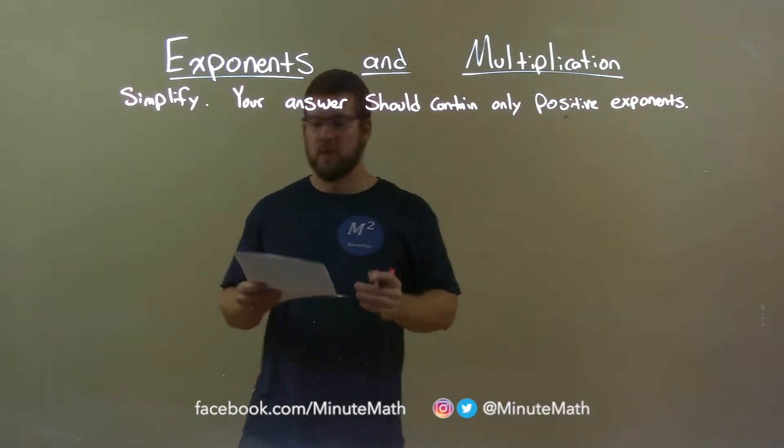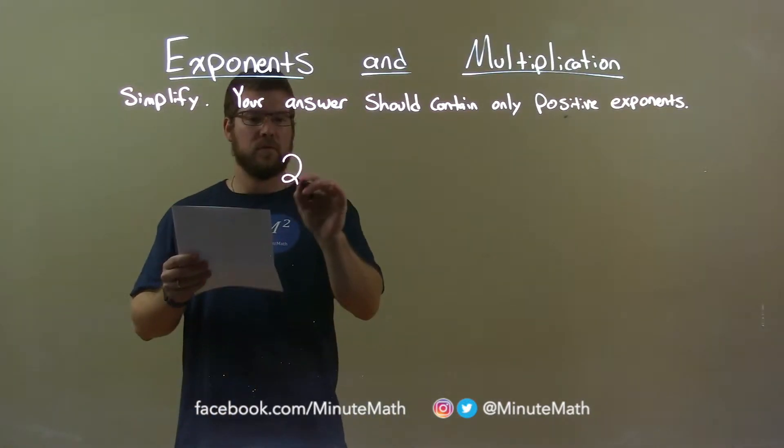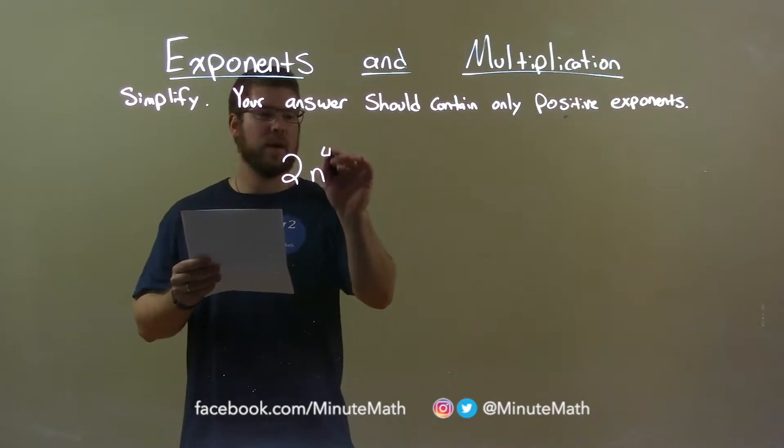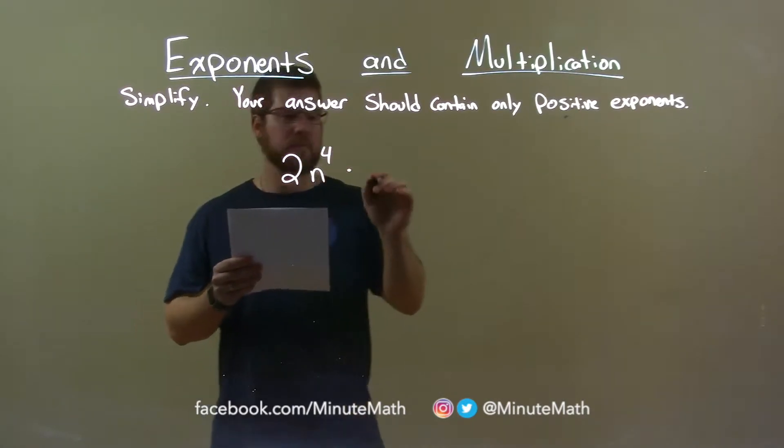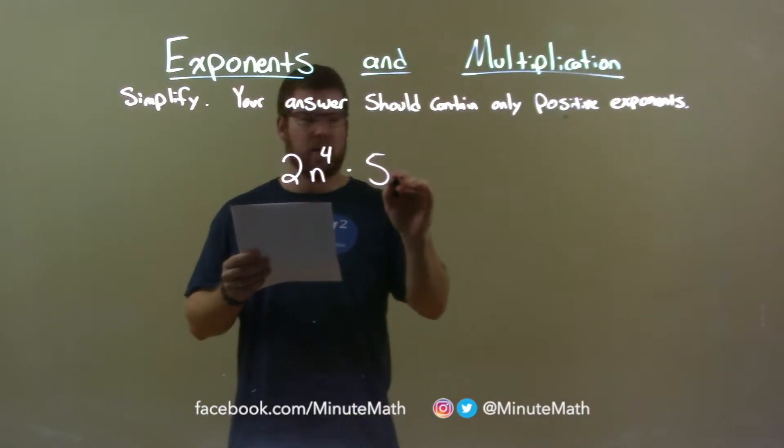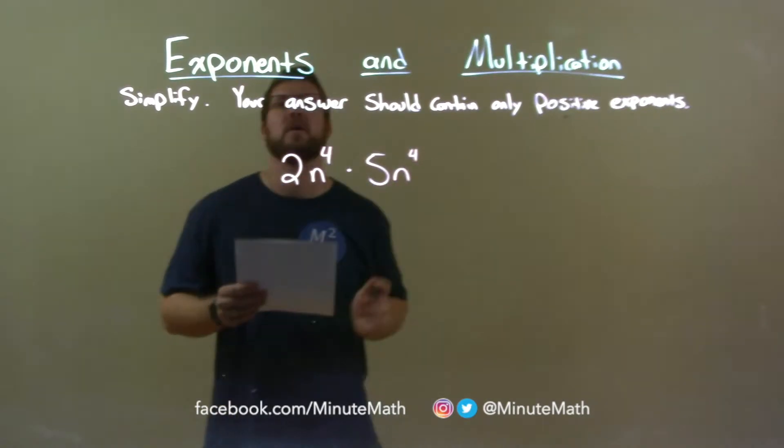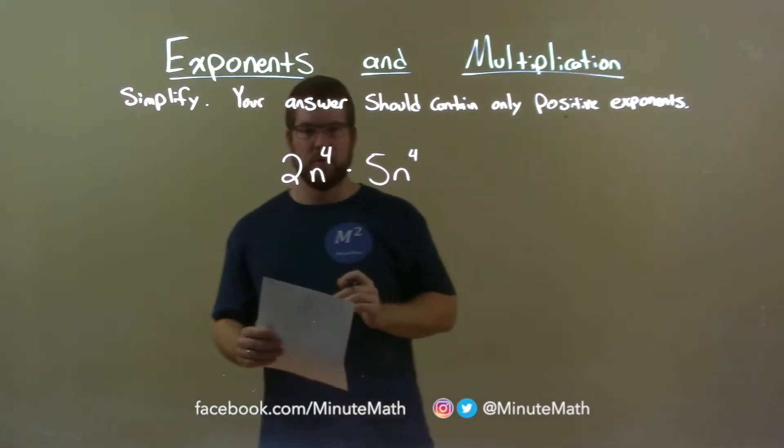So, if I was given this problem, 2n to the 4th power times 5n to the 4th power. We're multiplying these two terms.